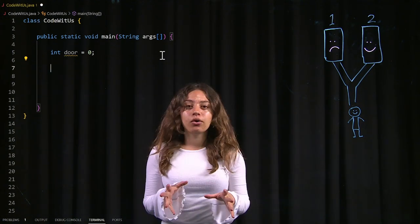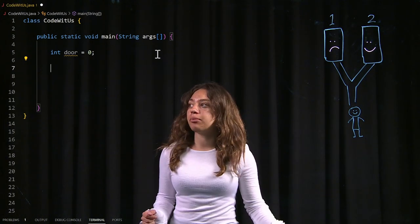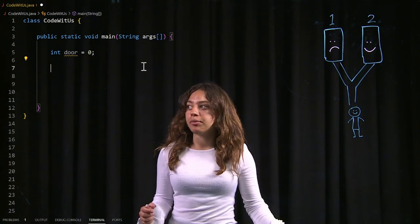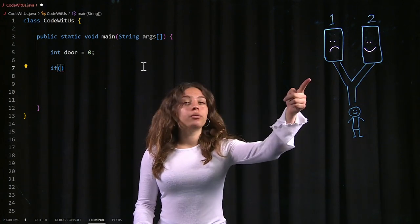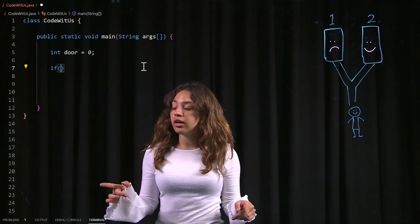Now let's code an example of what will happen when we actually pick a door. So first case scenario, we pick door number one. So in our if statement, we're going to say,